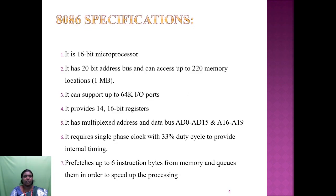The main specifications of the 8086 are: it is a 16-bit microprocessor with a 20-bit address bus, it can access up to 1 MB of memory, it supports up to 64K IO ports, it provides 14 16-bit registers, and it has multiplexed address and data buses — AD0 to AD15 and A16 to A19. It requires a single-phase clock with 33% duty cycle, and it prefetches up to 6 instruction bytes from memory and queues them to speed up processing.